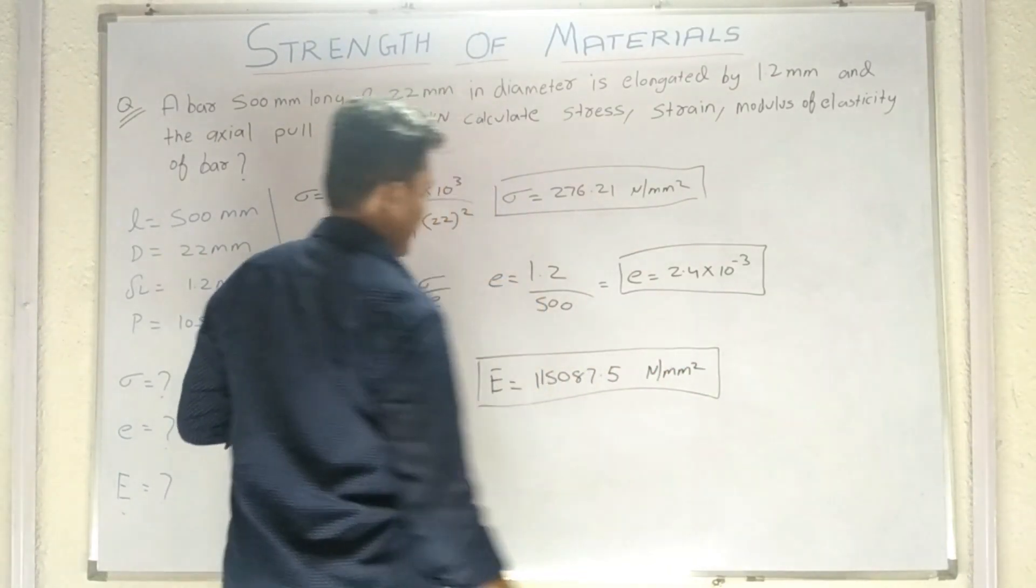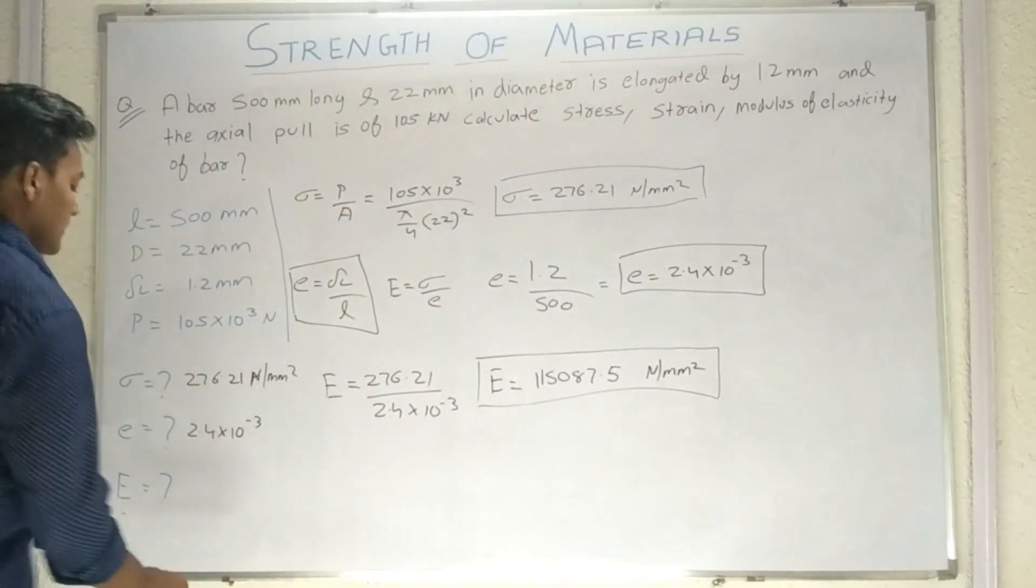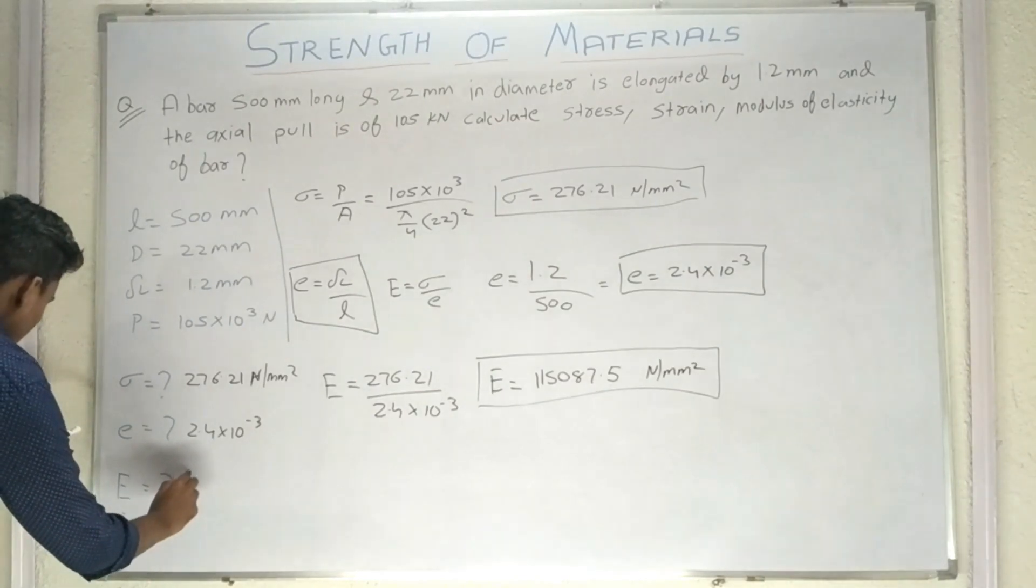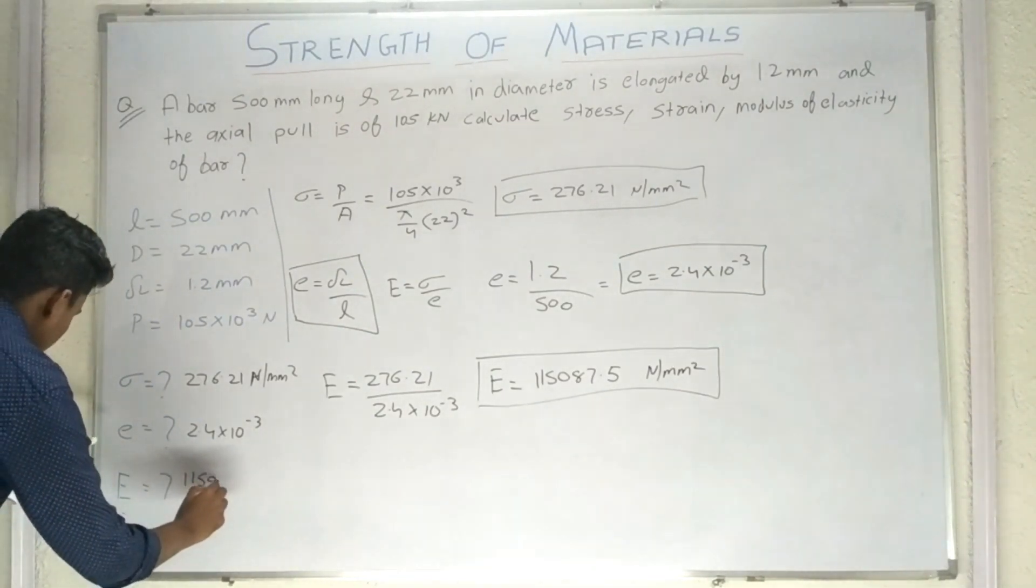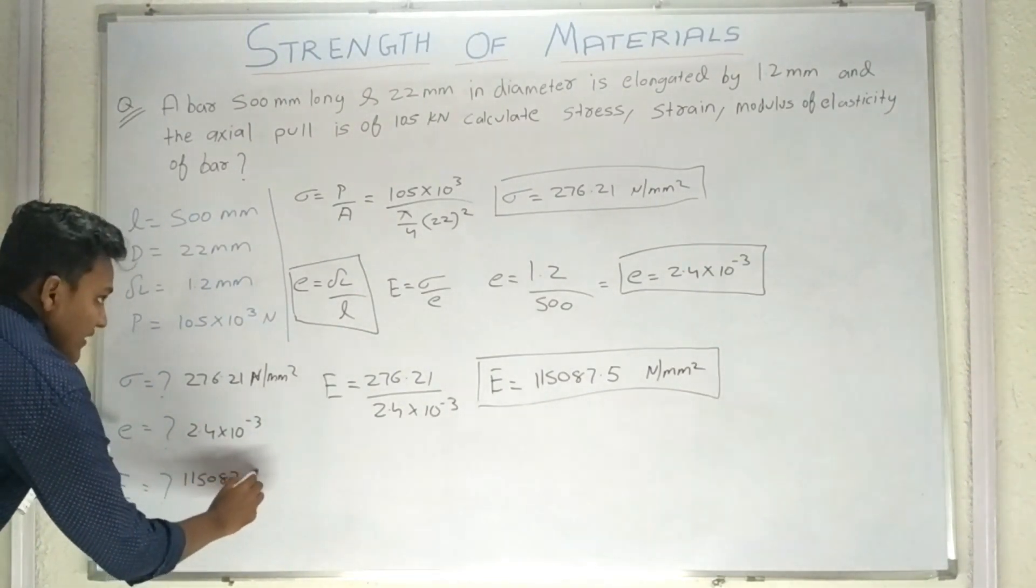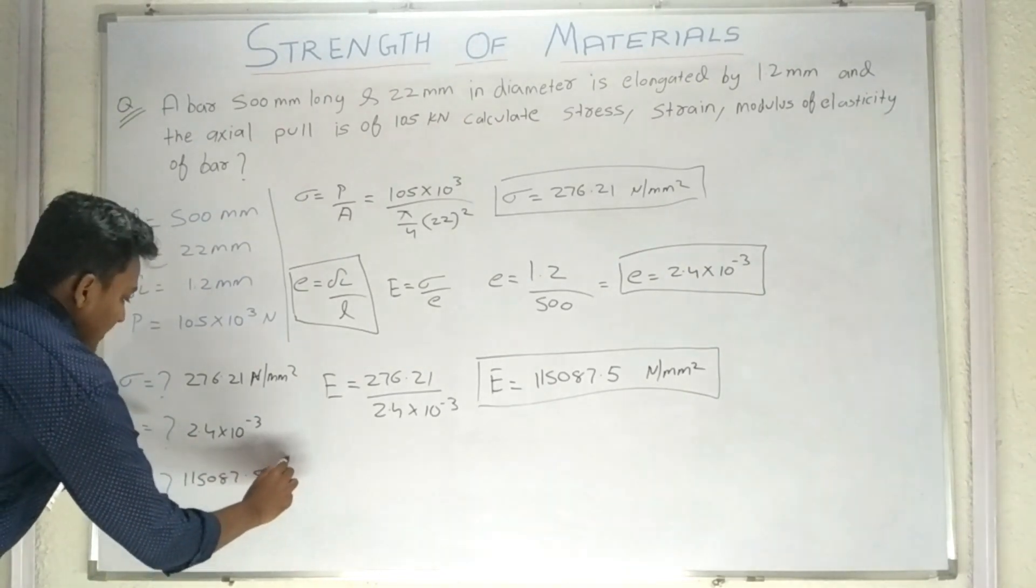Aur iska jo unit hoga, Young's modulus ka, woh hoga Newton per mm square. Dekho, ye hoga. Young's modulus ka again 115087.5.